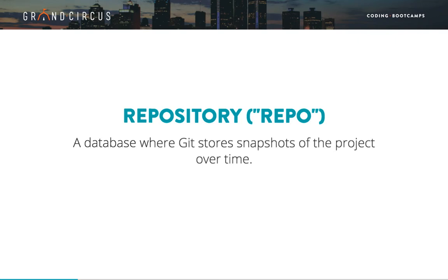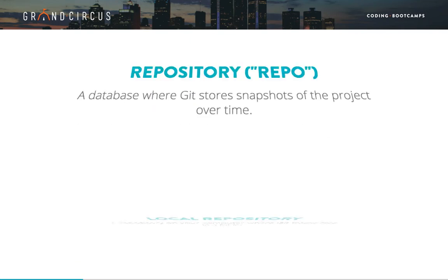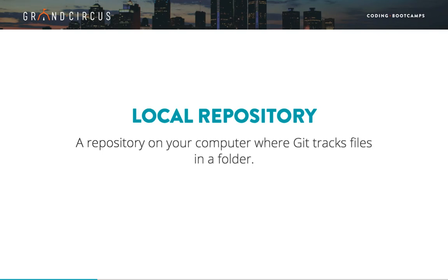We refer to two kinds of repositories: Local Repositories and Remote Repositories. A Local Repository is where Git tracks changes to files in a folder on your computer. It's called Local because it's right there on your computer. You set up a Local Repository by running git init, which creates a brand new empty Local Repository that will start tracking files in that directory.